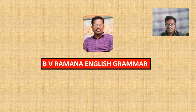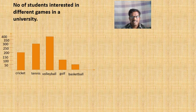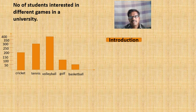Hello, this is BV Ramana. Welcome to BV Ramana English Grammar. In this video I would like to share with you the topic: how to make slow learners describe a bar diagram. Here is a bar diagram. The heading of the bar diagram is 'Number of students interested in different games in a university.' The question is how we can make our slow learners write a description about this diagram. It will be very easy.